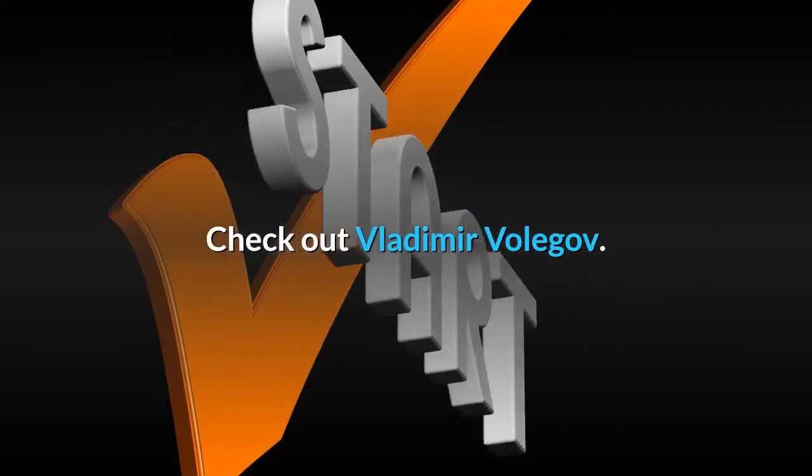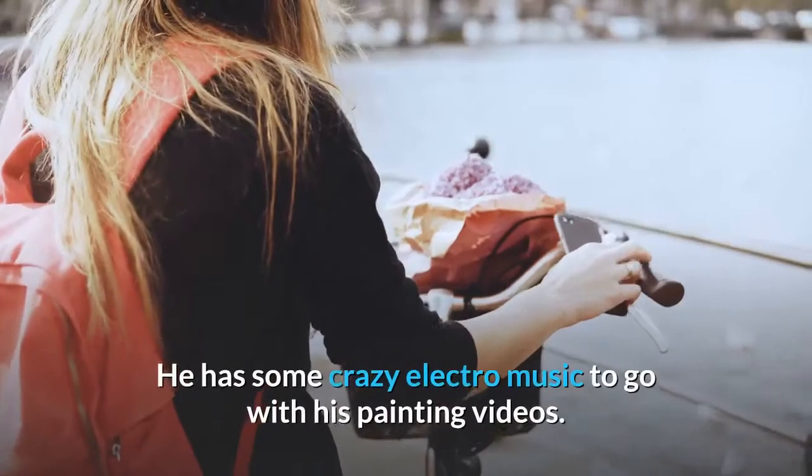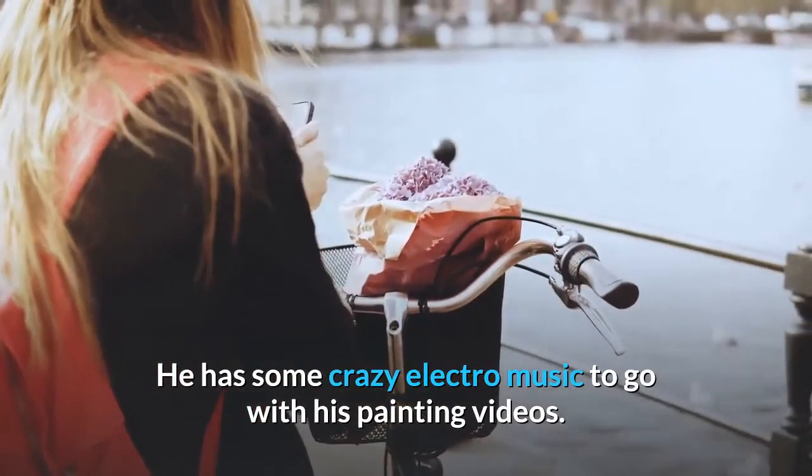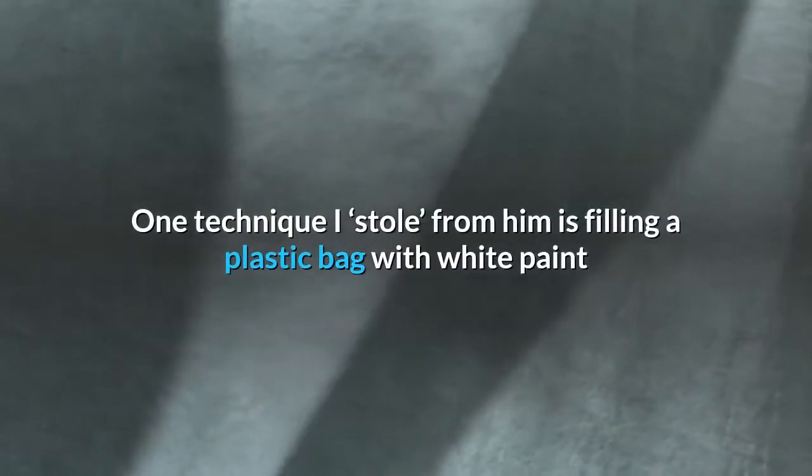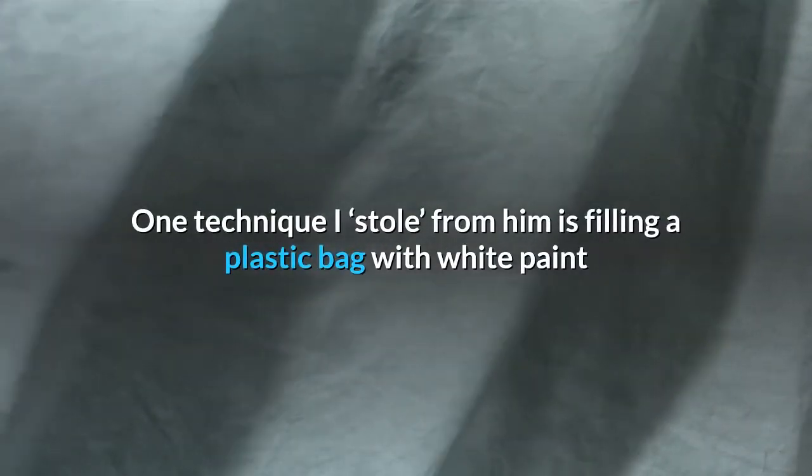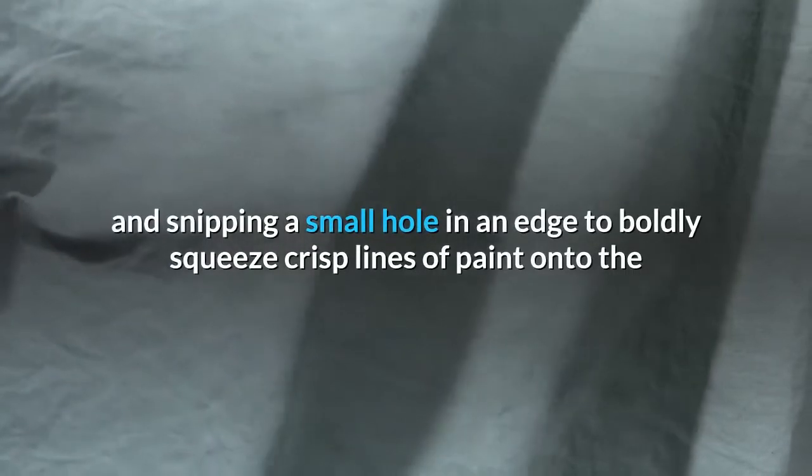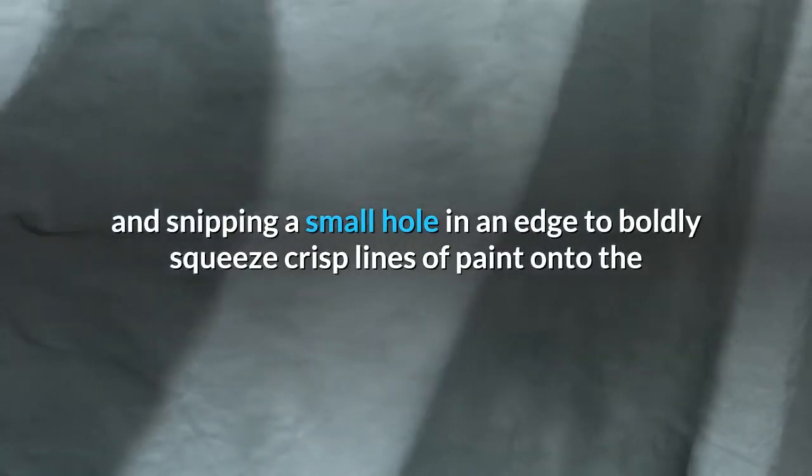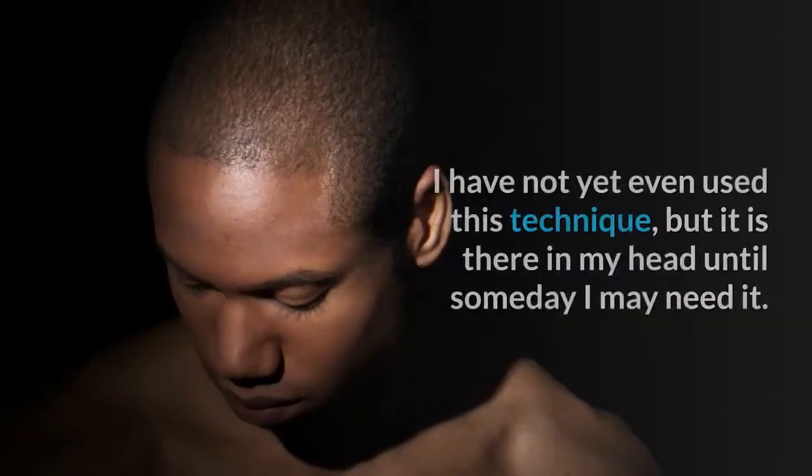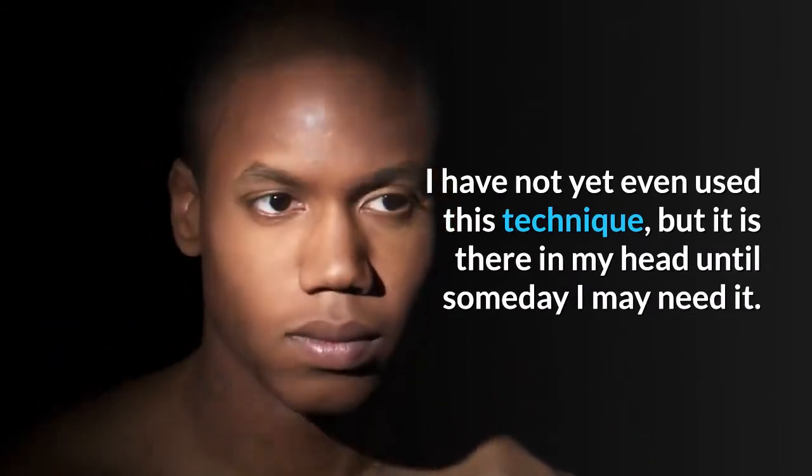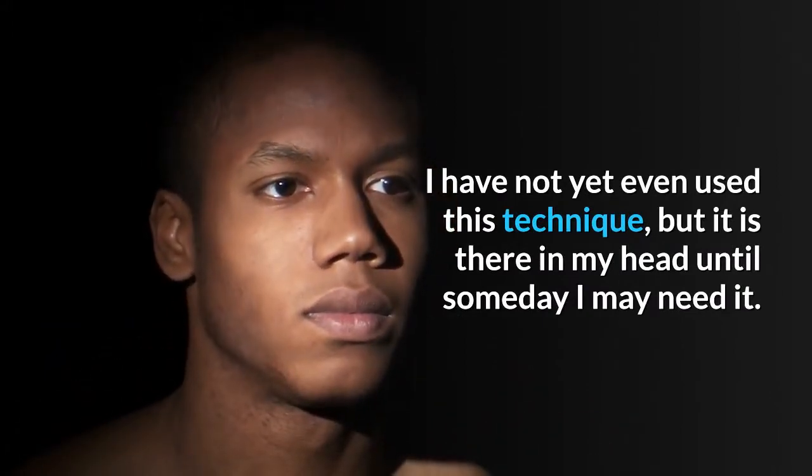Check out Vladimir Volga. He has some crazy electro music to go with his painting videos. One technique I stole from him is filling a plastic bag with white paint and snipping a small hole in an edge to boldly squeeze crisp lines of paint onto the canvas. The way he used it was to render the reflection of a sailboat mast in the water. I have not yet even used this technique, but it is there in my head until someday I may need it.